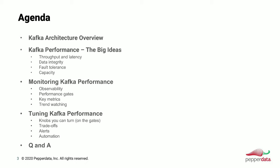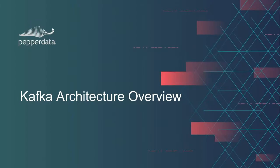Then we'll talk about the big ideas when it comes to Kafka performance with any distributed system — the things you need to think about and a way of thinking about performance and monitoring. And then monitoring performance and tuning the performance, covering both so that you know where you are as well as how to get to where you want to be.